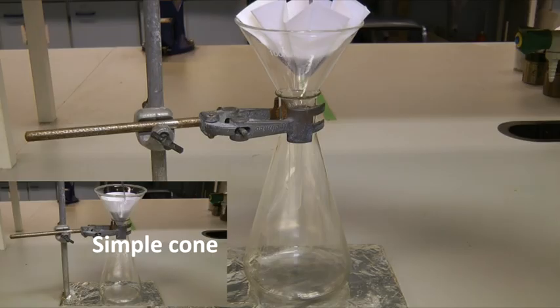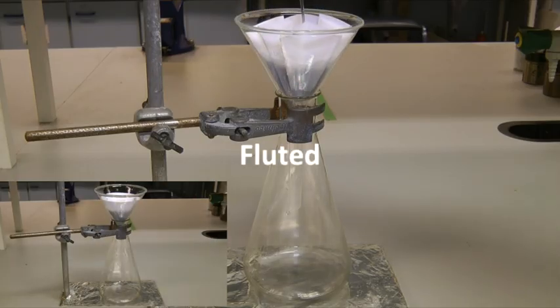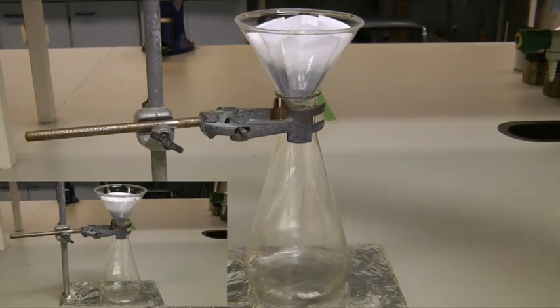A fluted filter paper gives the best results, with a large surface area available for filtration and less chance for the filter paper to be blocked by particles of solid.